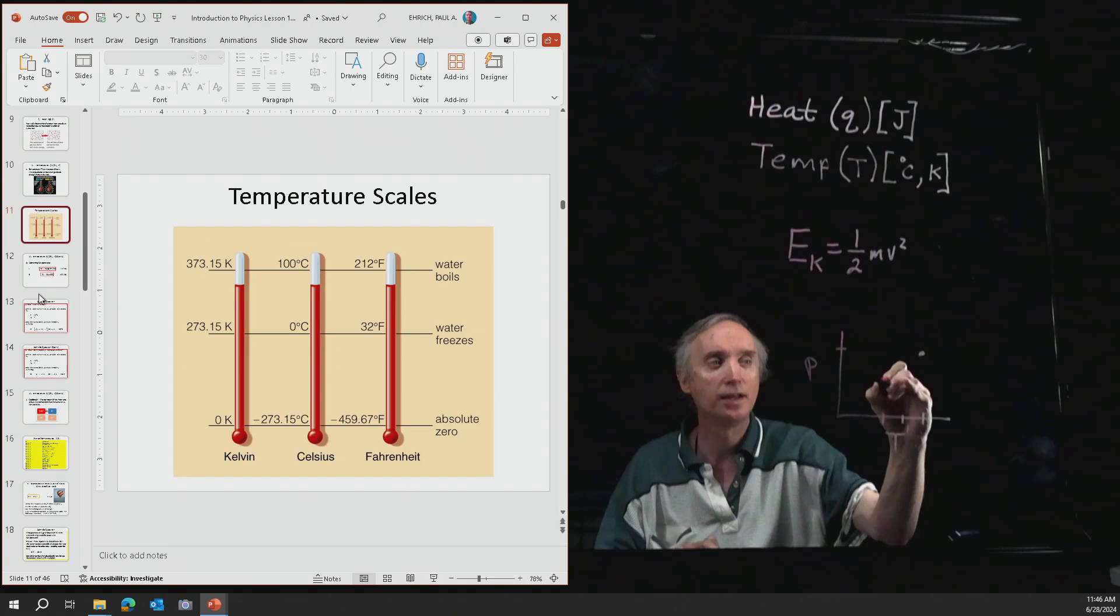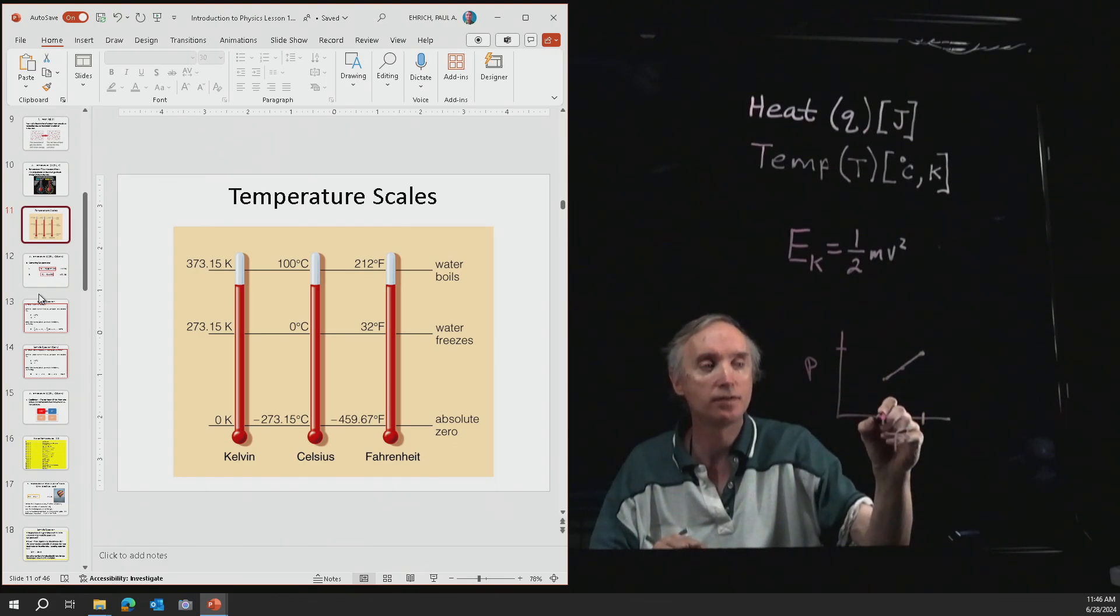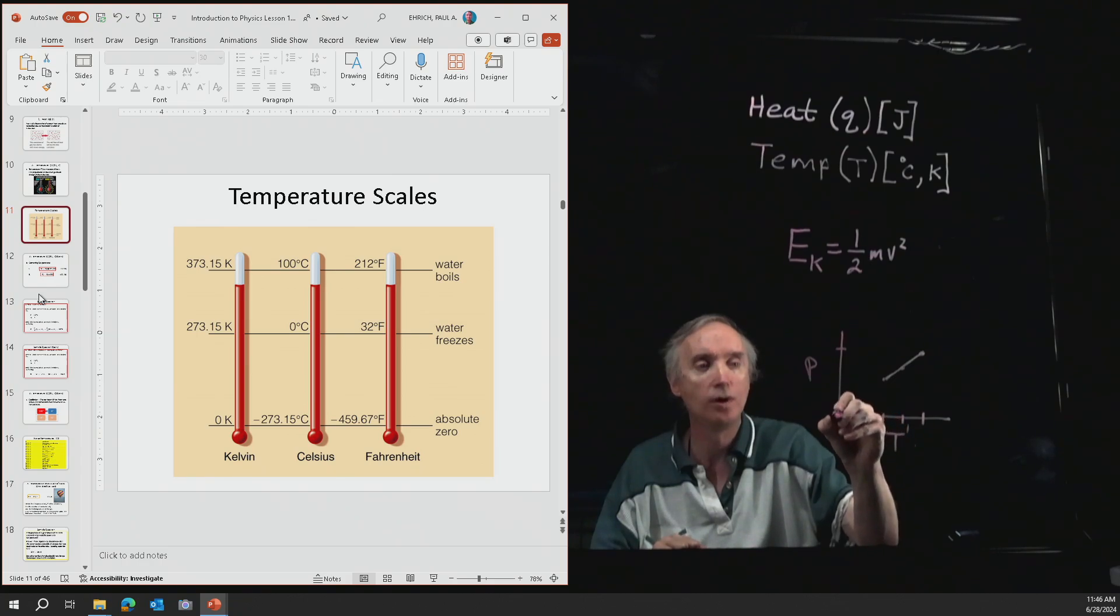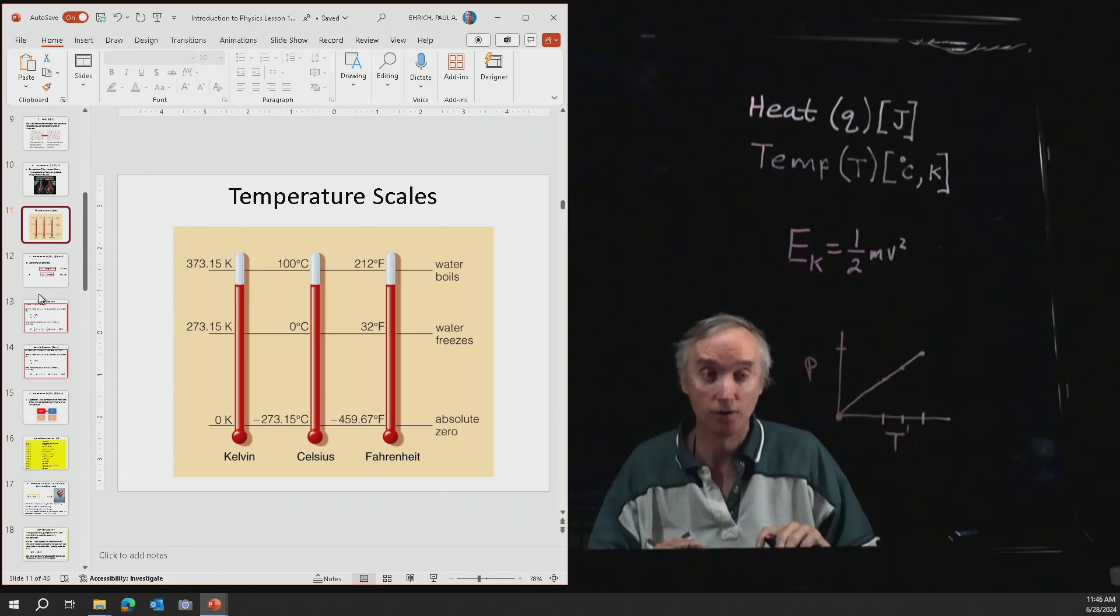Then they noticed that this was making a straight line. And then they wanted to know, what would happen theoretically if you could take the temperature all the way down to where the pressure was 0? When the pressure would be 0, then what they found was this line intercepted at 0, 0. So then they said, let's start all over again.